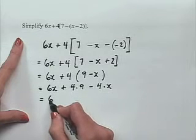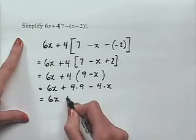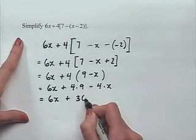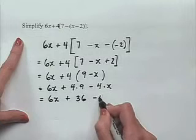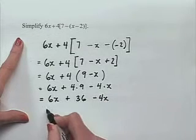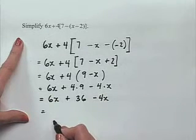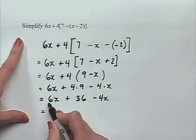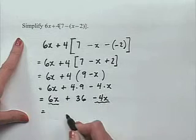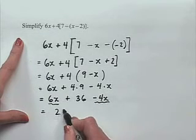Combining like terms, 6x minus 4x equals 2x, plus 36 remains as our final simplified result: 2x plus 36.